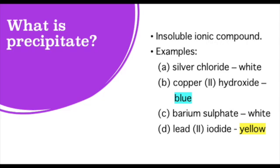What is a precipitate? A precipitate is an insoluble ionic compound. I'll give you four examples of insoluble ionic compounds together with their colors.